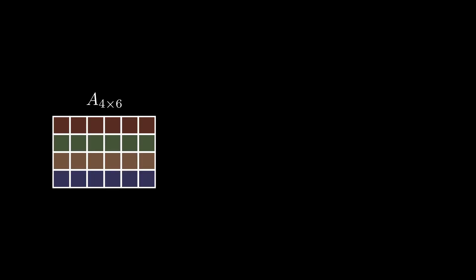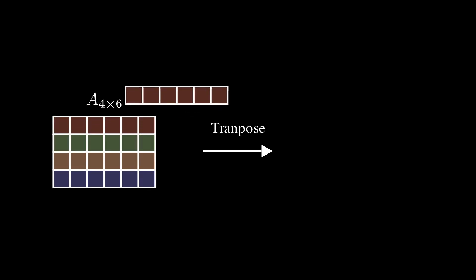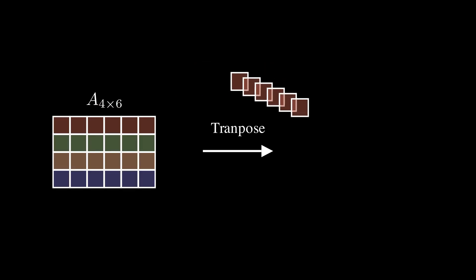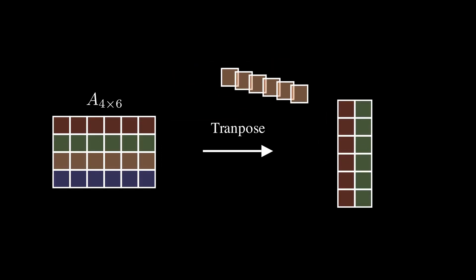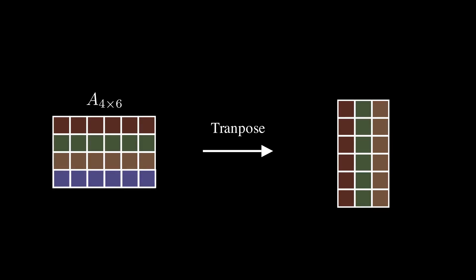For the first example, we have matrix A of size 4 by 6. To apply the transpose operation, we take the first row and flip it 90 degrees to get a column vector — that is the first column of our new matrix. Then we repeat the same thing for the other rows: the second row, the third row, and the last row. At the end, we get A transpose with dimension 6 by 4.